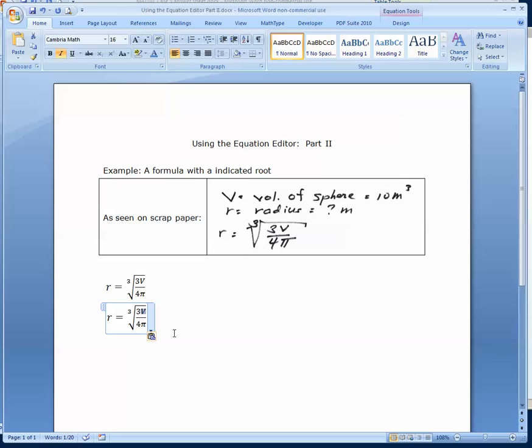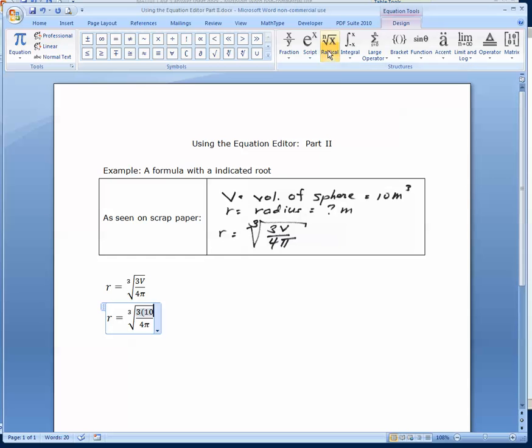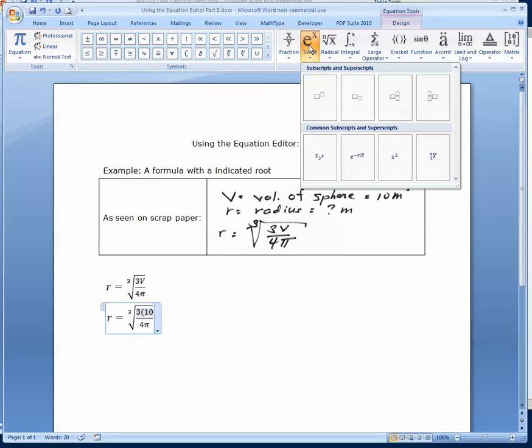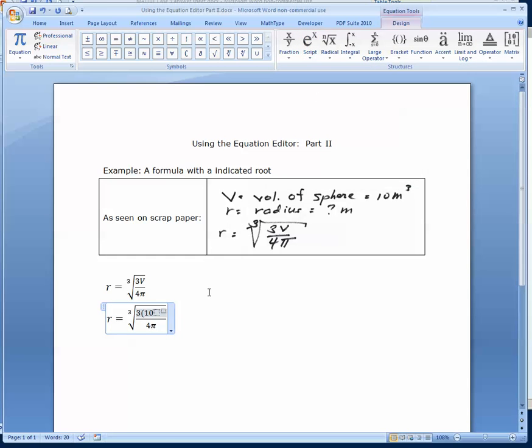Instead of V, we can put 10. And meters is cubed, so that is something that requires an exponent. We'll go back to the script field, click there, put meters and cubed there.